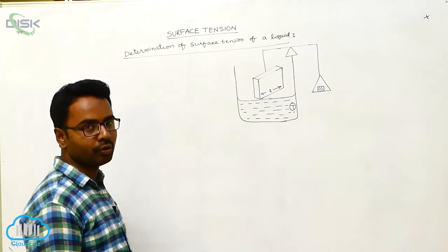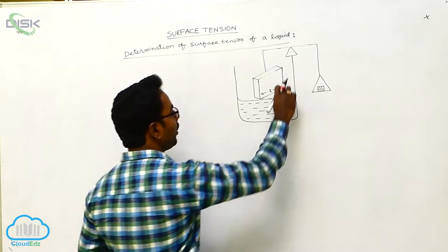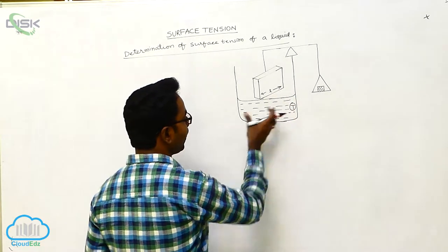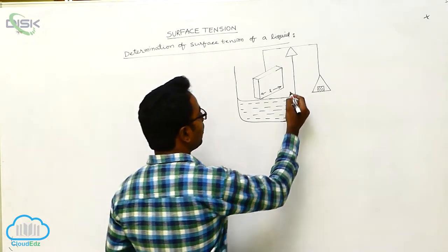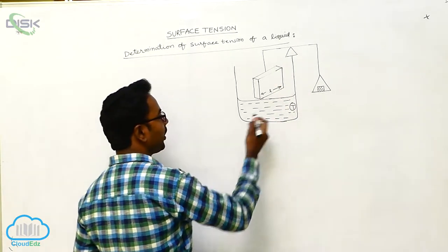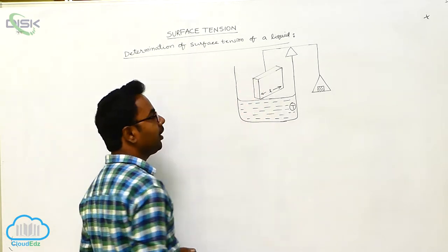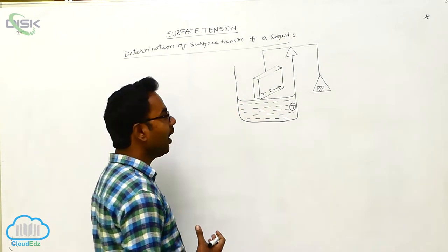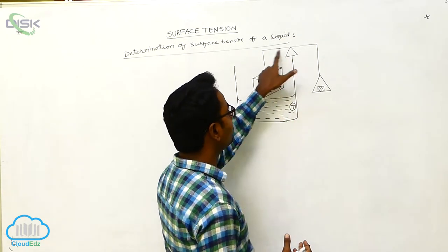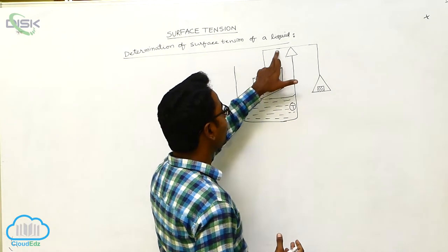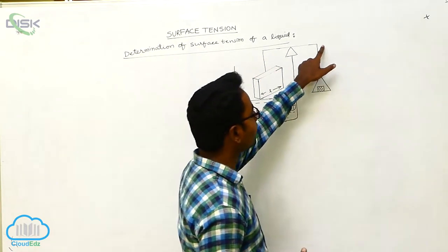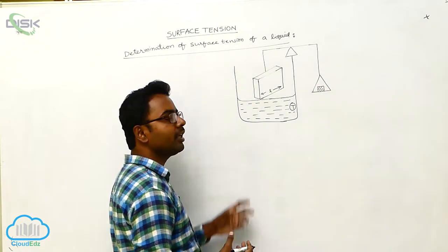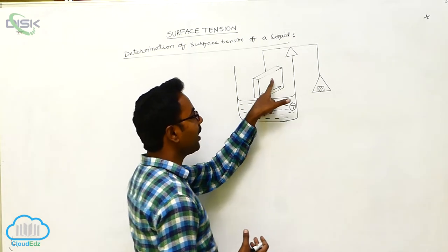To determine the surface tension of a liquid, water is taken in a glass beaker. Over the beaker, a rectangular plate is placed vertically and connected to a pan over a fulcrum by a rod. One end of the rod is connected to the rectangular plate and the other end to the pan. A sufficient weight is placed in the pan to balance the rectangular plate.